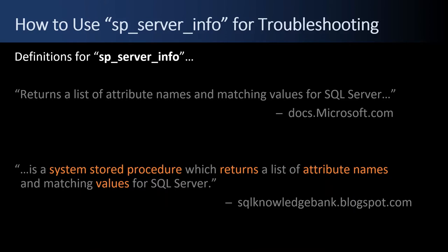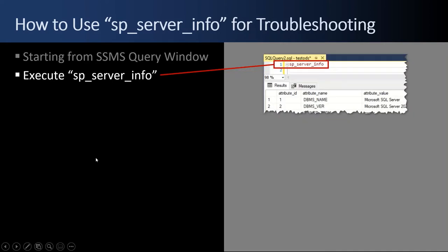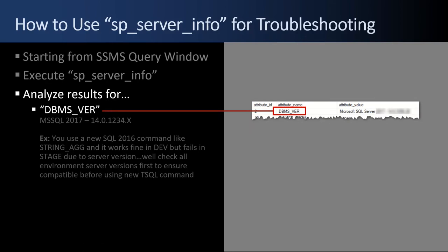Starting from SQL Server Management Studio, we execute SP_ServerInfo from the query window, and then we analyze the results that pop up in the grid for three different important attributes. The first is the DBMS version, and it'll look something like Microsoft SQL Server 2017 - 14.0.some_big_version_number.